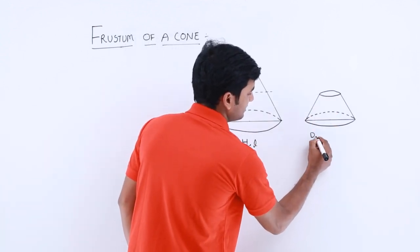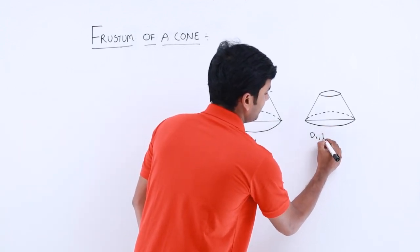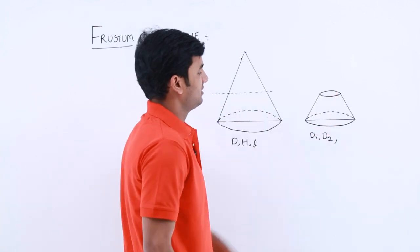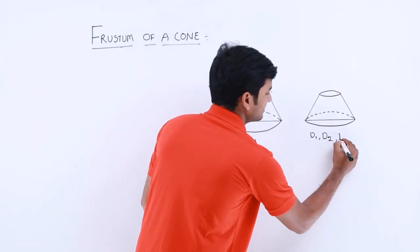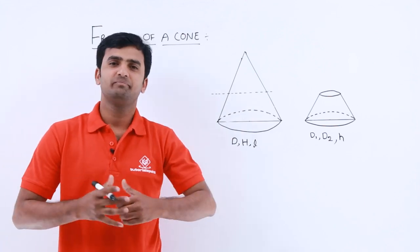Here we have two diameters. The downward portion diameter, that is D2, and here we have height of frustum also, let's consider it as small h. So guys, this is the basic information about frustum.